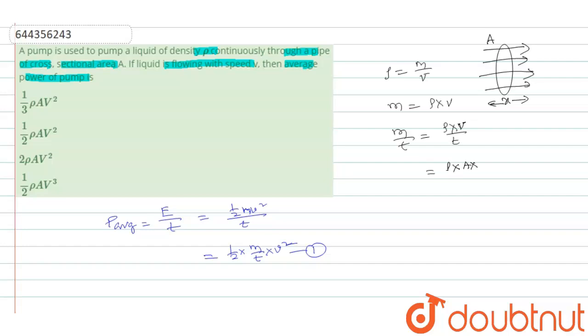So volume is equal to area into displacement X by time T. So I am writing m by T equals ρ into A into X by T, which I can write as velocity because displacement by time. So this is what m by T.